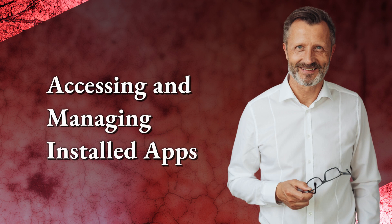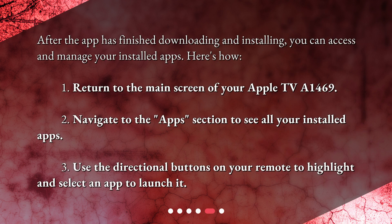Accessing and managing installed apps. After the app has finished downloading and installing, you can access and manage your installed apps. Here's how. 1. Return to the main screen of your Apple TV A1469. 2. Navigate to the Apps section to see all your installed apps. 3. Use the directional buttons on your remote to highlight and select an app to launch it.